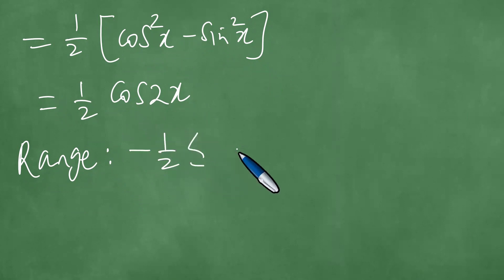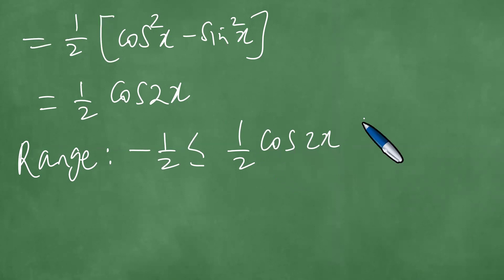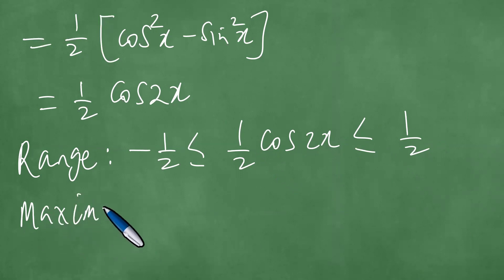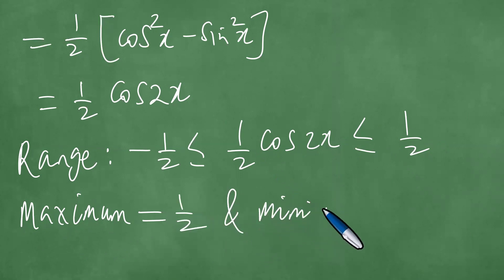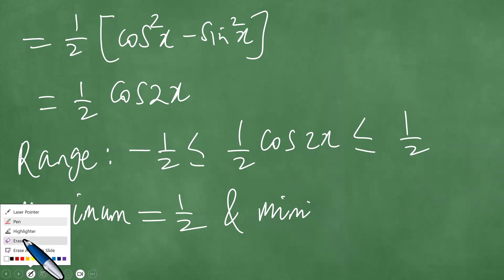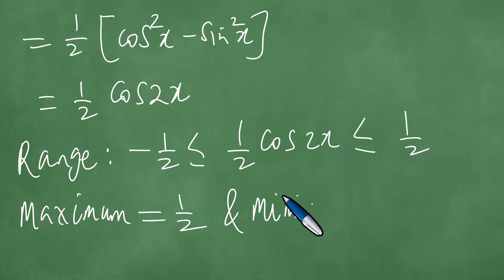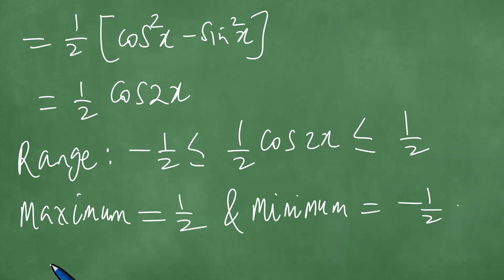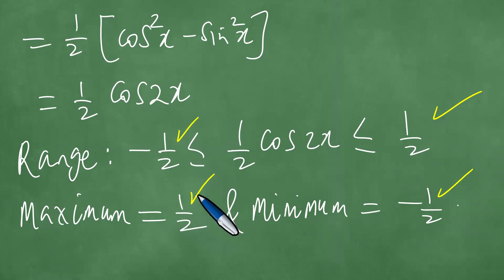The range is: minus one half, less than or equal to one half cosine 2x, less than or equal to one half. In which case the maximum is one half and the minimum is minus one half. So the maximum is positive one half and the minimum is that one — minus one half. We have solved this problem and now we can write a conclusion.